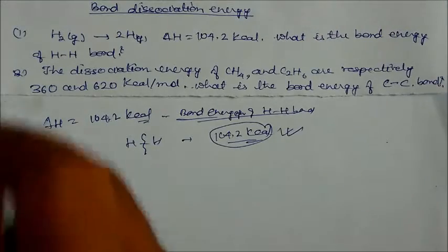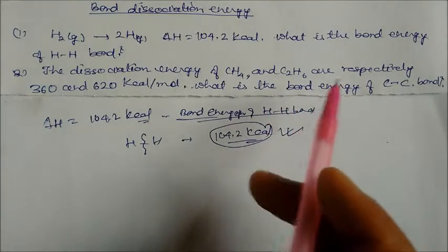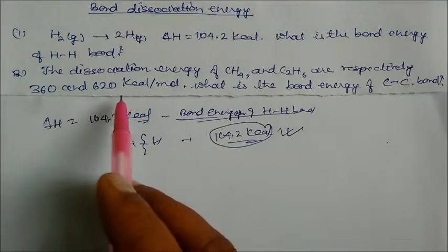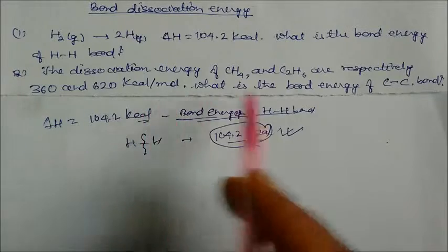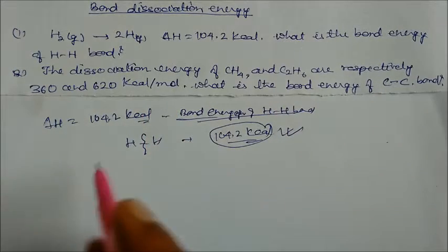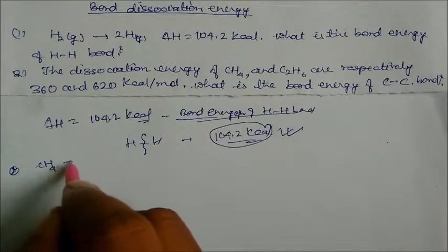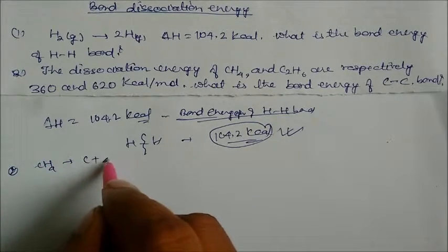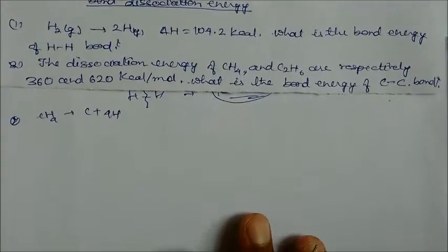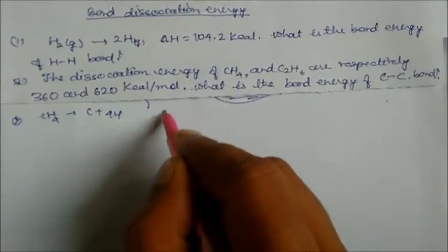Now the second problem: the bond dissociation energies of methane CH₄ and C₂H₆ are respectively 360 and 620 kilocalorie per mole. What is the bond energy of the C-C bond? Here, CH₄ is converting into carbon plus 4 hydrogen. This is for the second question.